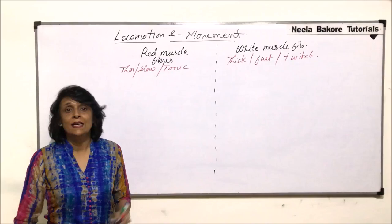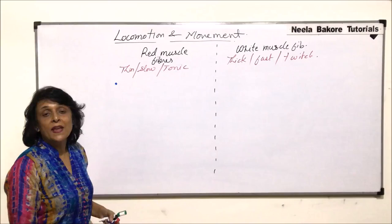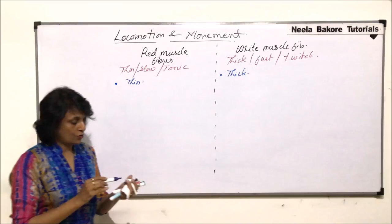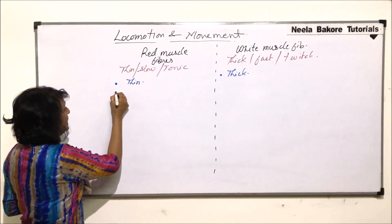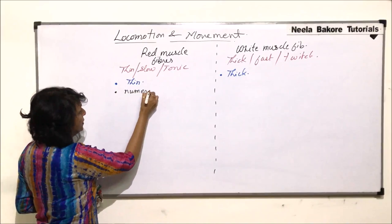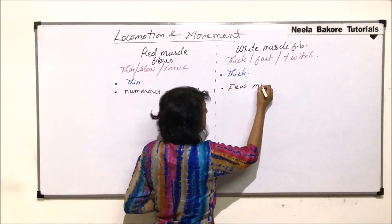Once we understand the structure and properties of these muscle fibers, we will be able to understand why these terms are given. The first comparison is diameter: red muscle fibers are thin filaments as compared to white ones, which are thick muscle fibers. The second point of comparison is the number of mitochondria — red muscle fibers have numerous mitochondria, whereas white muscle fibers have very few mitochondria.